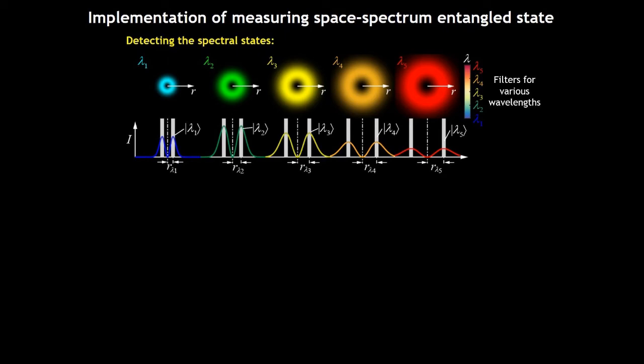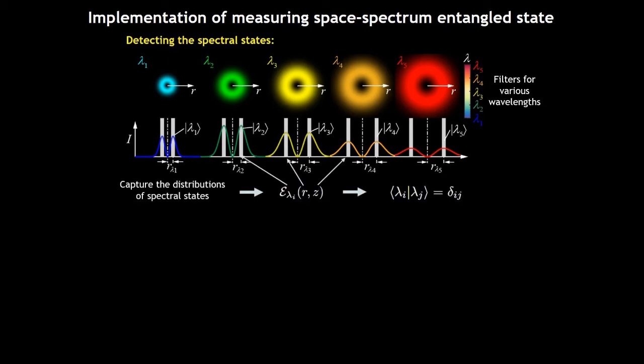The first step is to detect the spectral state. We can obtain the various spectral components by the filters for various wavelengths. And then find the maximum region correspondingly and construct the classical field as shown in the gray band regions.